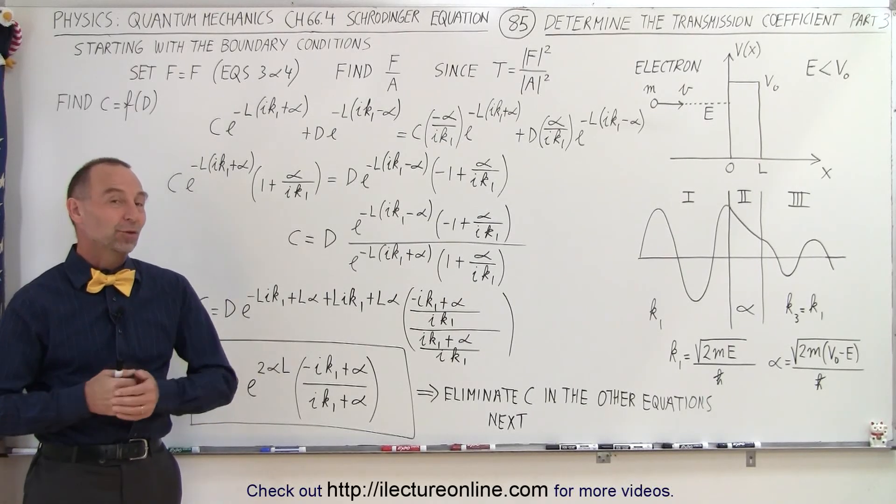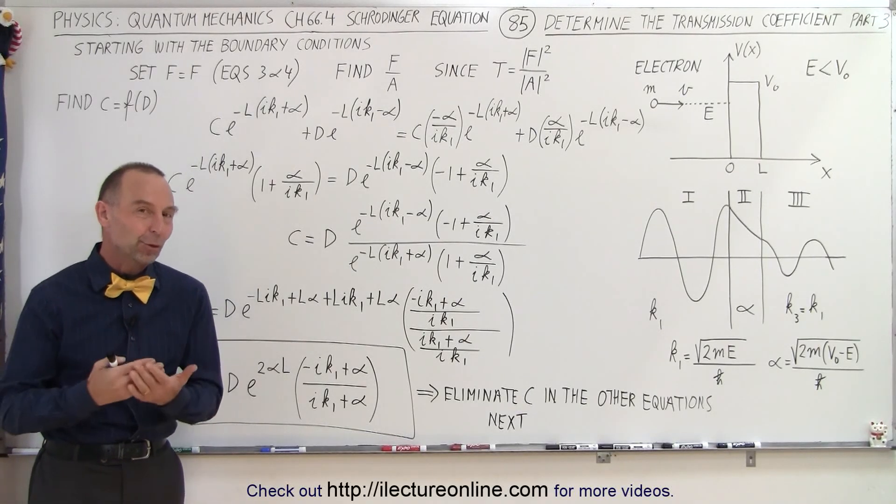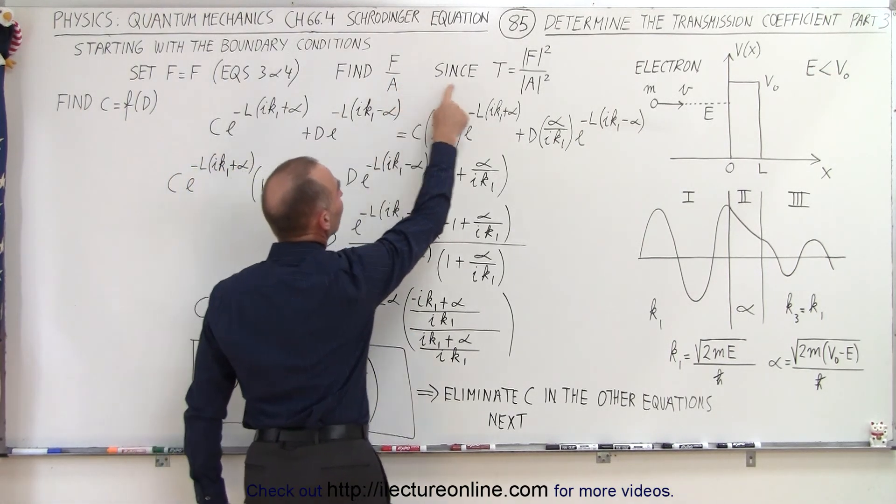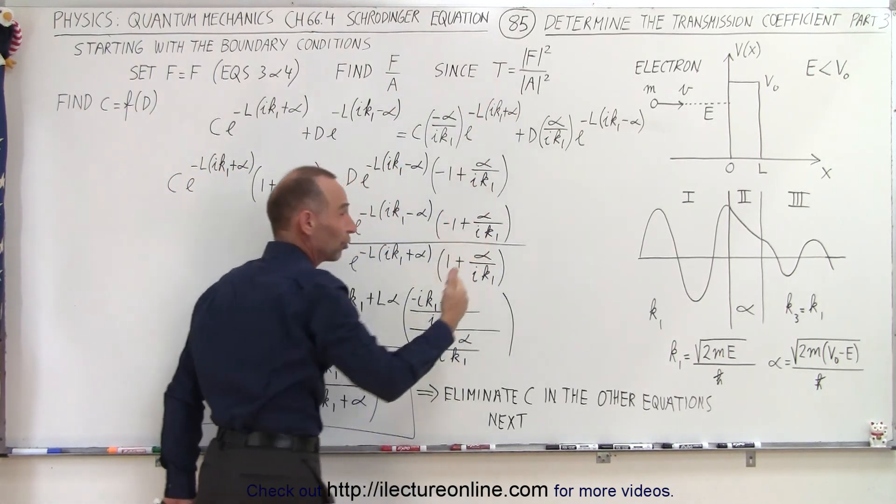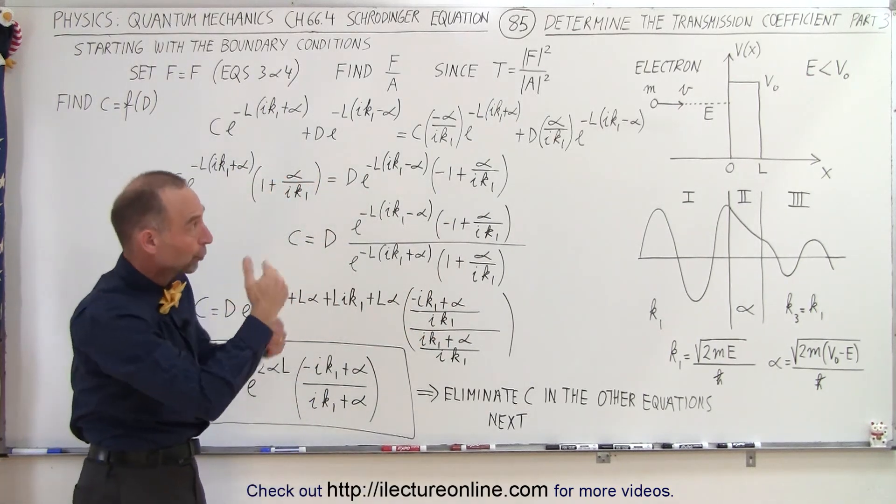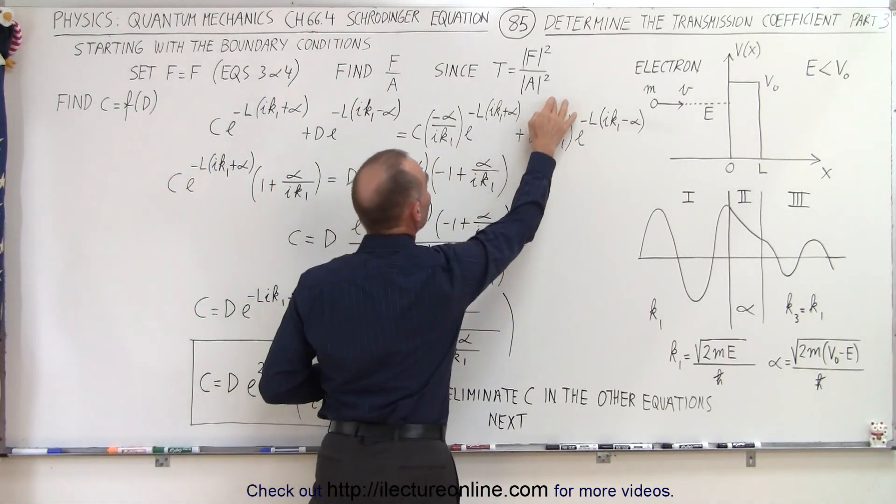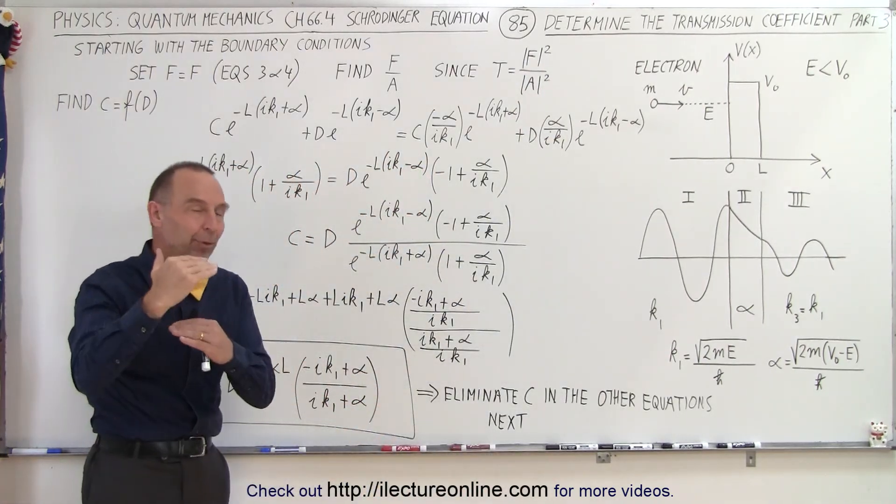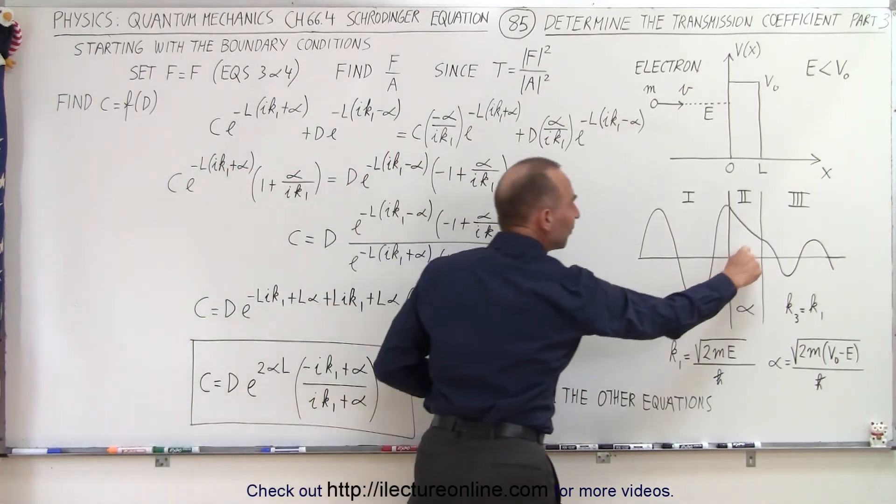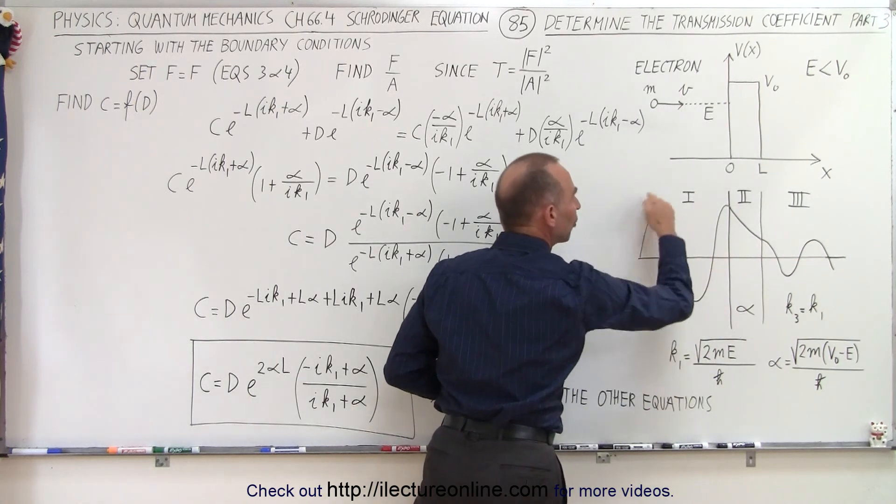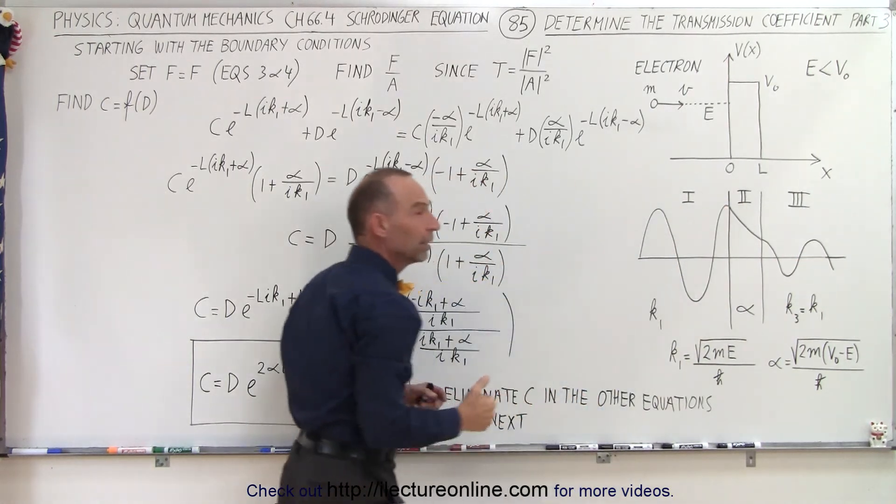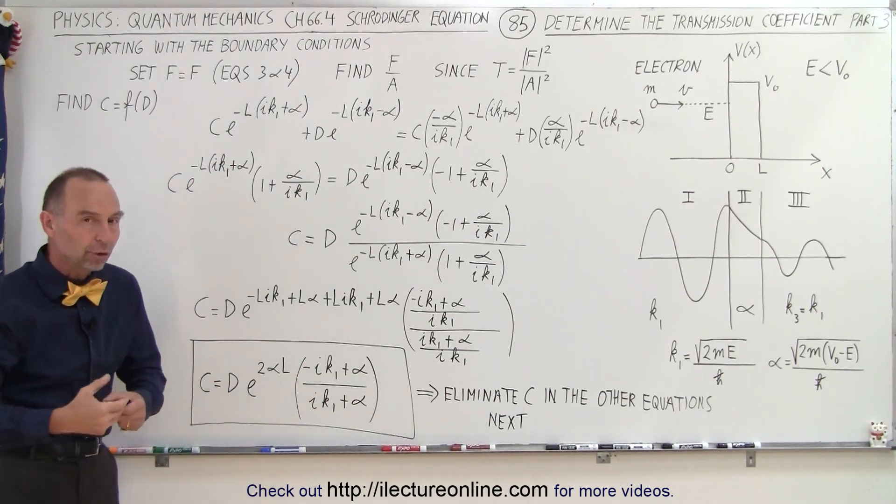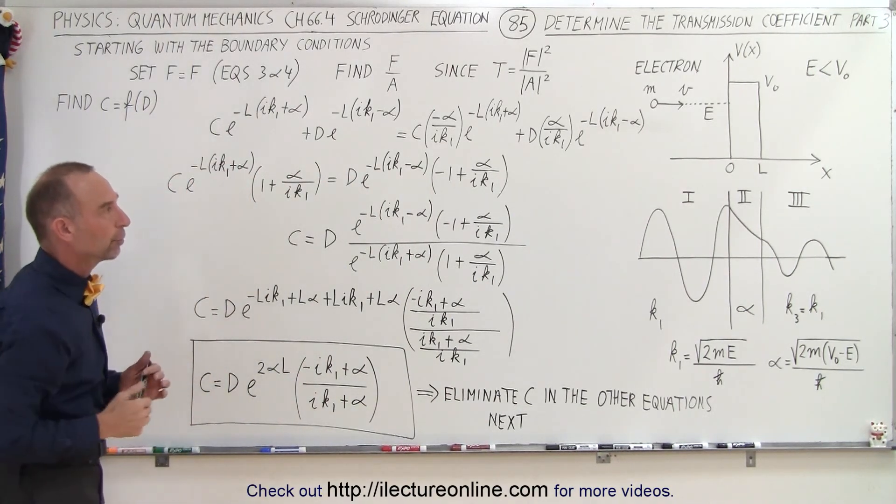Welcome to our lecture online. We're still trying to find the transmission coefficient by finding the ratio F divided by A, since the transmission coefficient, which is also the probability that a particle will go through a barrier, is defined as F squared divided by A squared. F is the amplitude of the wave on the other side of the boundary, A is the amplitude of the wave before it reaches the boundary. The ratio of those amplitudes squared is the transmission coefficient, also the probability that the particle will go through the barrier.